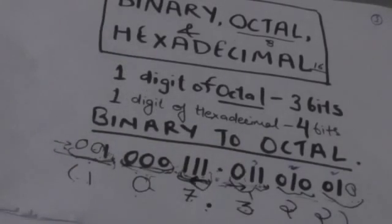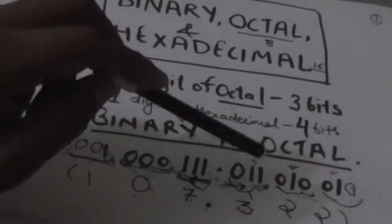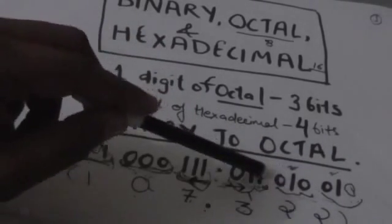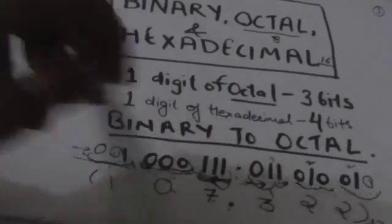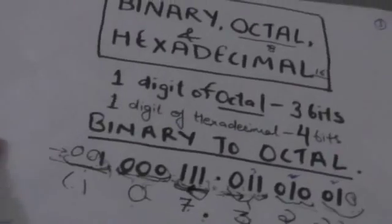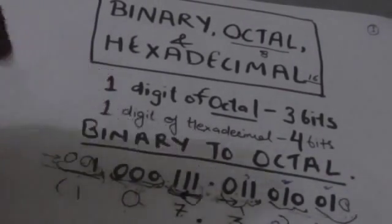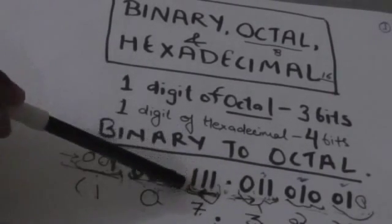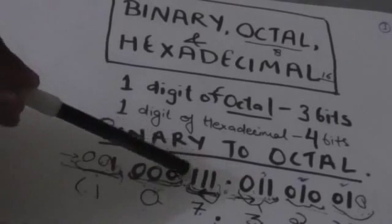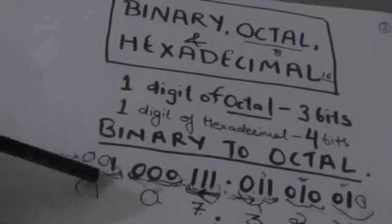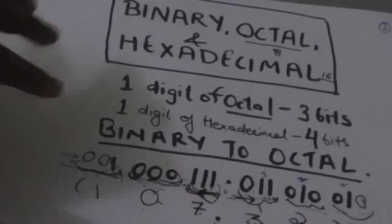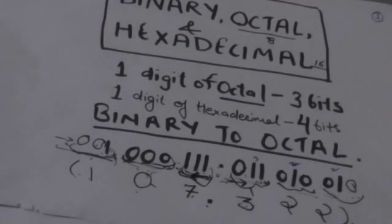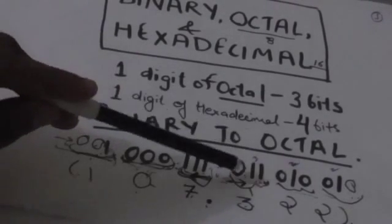First we will proceed to the right. When we proceed to the right, we will make a group of the first three bits, then a group of the next three bits, and then a group of the next three bits. Then we will proceed to the left of the radix point — first a group of three bits, then the next group, and then the next group of three bits.